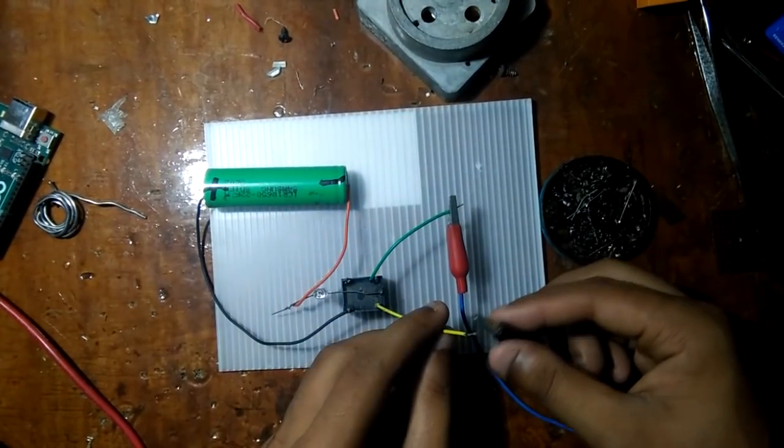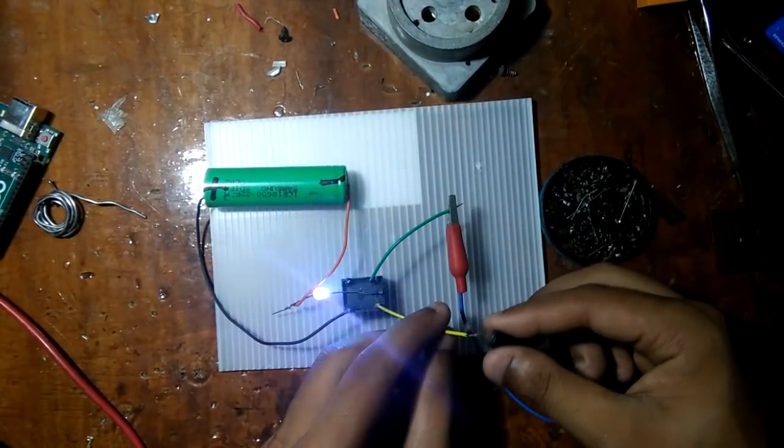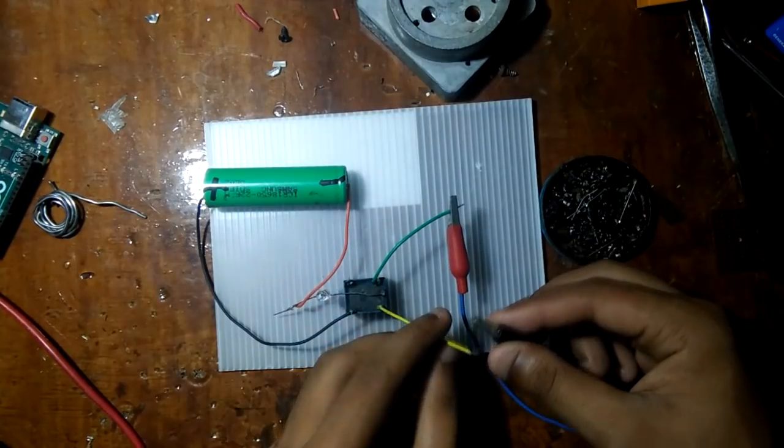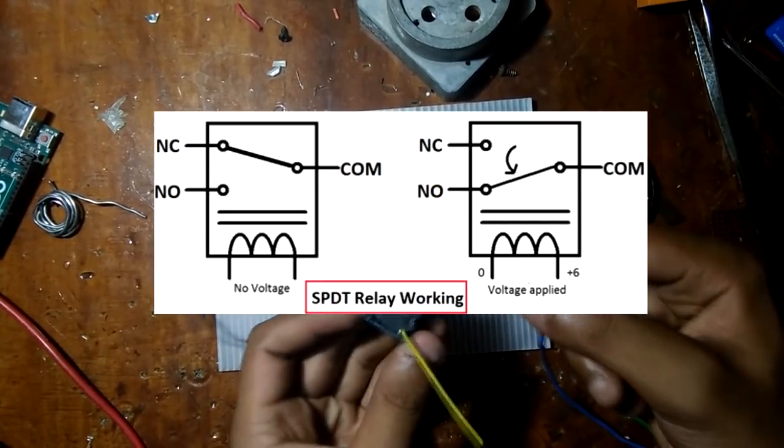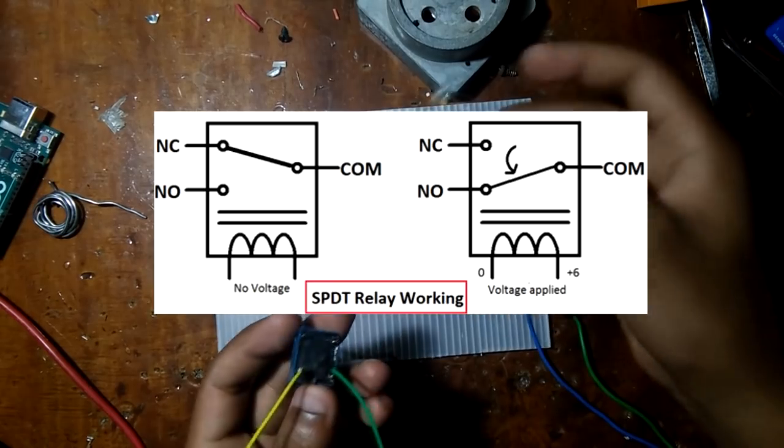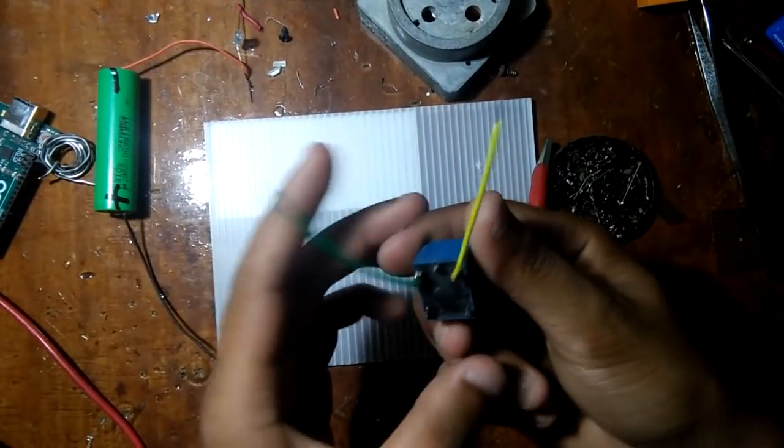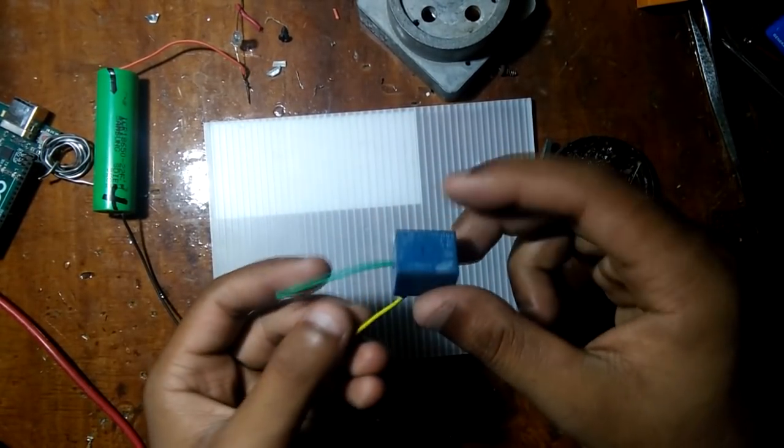As you have observed, when we apply voltage to relay positive and negative terminals we can control the flow of electricity for these two points. It's like a switch, only difference is relay is electromechanical but a switch is a complete mechanical device.